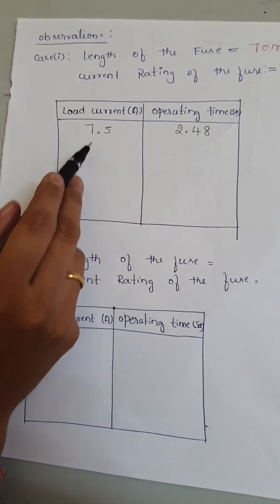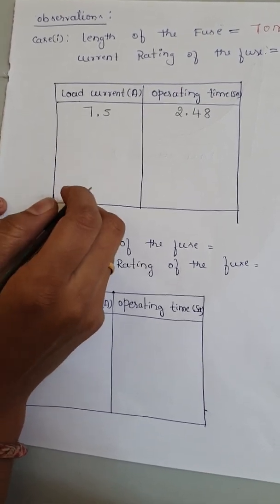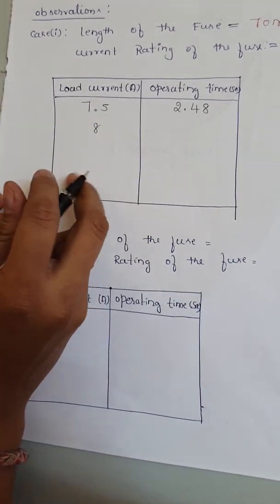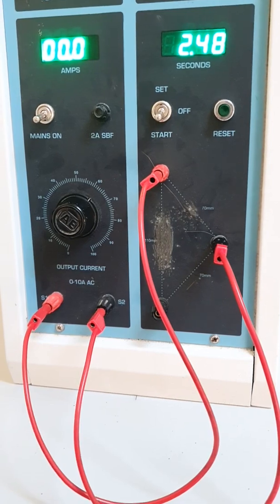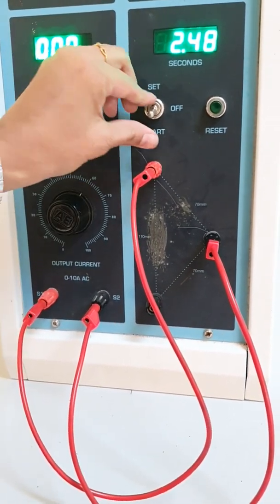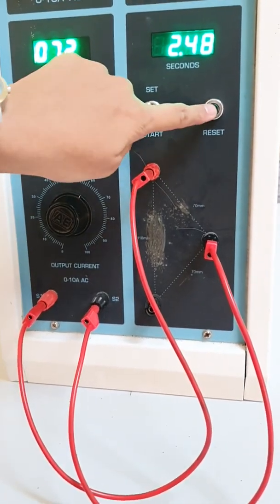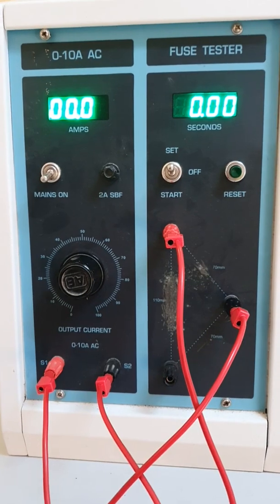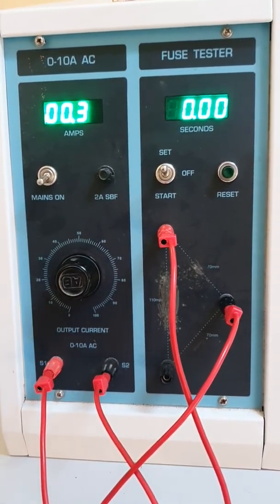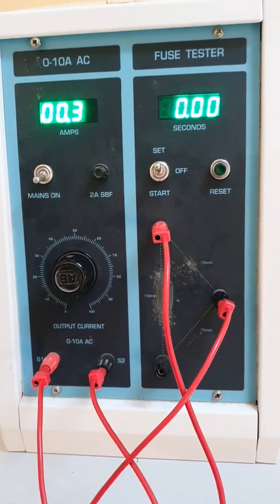Similarly, we will take a few more readings by increasing the load current in steps of 0.5 amperes. The next reading will be taken at 8 amperes. Since the fuse material has melted, we need to replace it with a new fuse wire. Before replacing, bring the toggle switch to off, then to set condition, press the reset button, and bring the load current back to minimum. For every reading, we must replace the fuse wire.